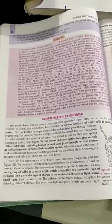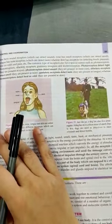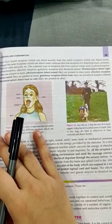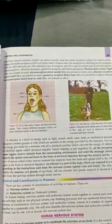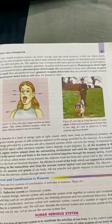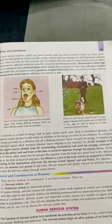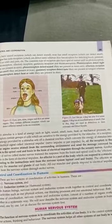We have different types of stimuli which we can detect — smell, taste, heat, pressure, etc. Let's talk first about photoreceptors. The word 'photo' means light, so photoreceptors are present in the eyes. Then we have phonoreceptors, which detect sound — they are present in the inner ear.